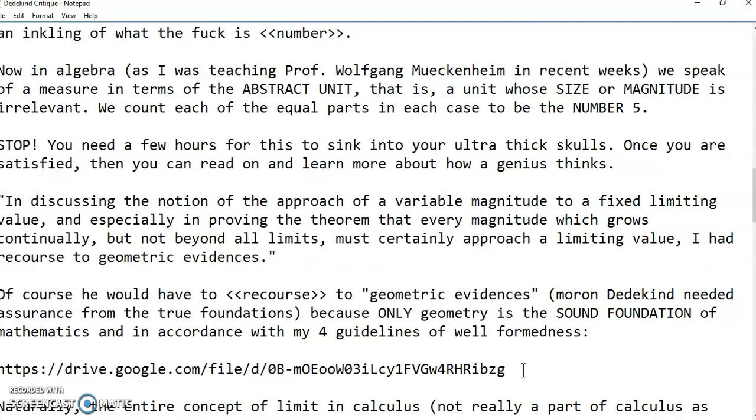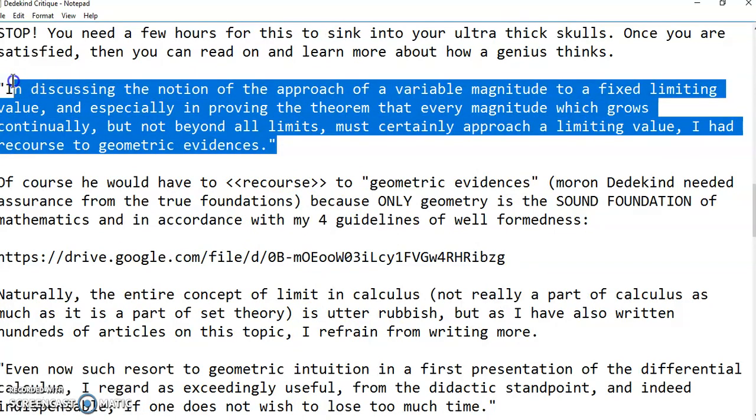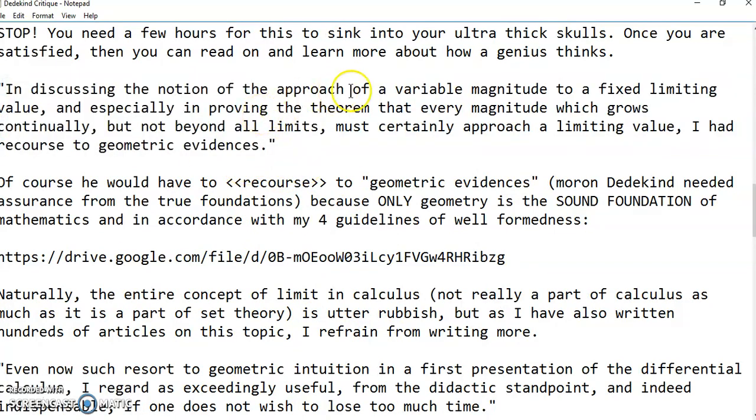Because these things were certainly never understood by anyone after Euclid or before me. I am the first to reveal these things to you. They've never been published. There is no reference. And what you're learning here is vitally important because mathematics is the science of measure and number. And number is the most important concept in mathematics. In his next line, Dedekind says: in discussing the notion of the approach of a variable magnitude to a fixed limiting value and especially improving the theorem that every magnitude which grows continually, but not beyond all limits, must certainly approach a limiting value.